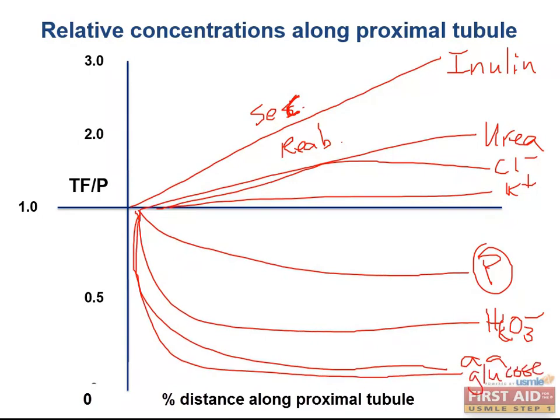Second, the tubular fluid to plasma ratio tells you how quickly something is absorbed relative to water. For example, glucose and amino acids are reabsorbed very quickly in the proximal tubule — much faster than water — so they are completely reabsorbed by the end of the proximal tubule.